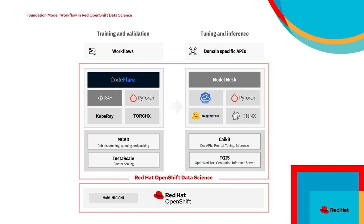On top of all of this, we have KServe and ModelMesh, which are basically the controller and routing layer for inferencing. As we bring up these models as pods on top of OpenShift and OpenShift Data Science, KServe and ModelMesh allow you to handle the model management aspects. On the left-hand side, we have the training and validation layer, which is Project CodeFlare.